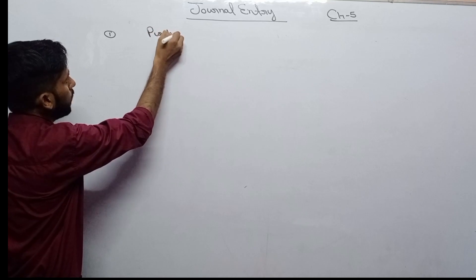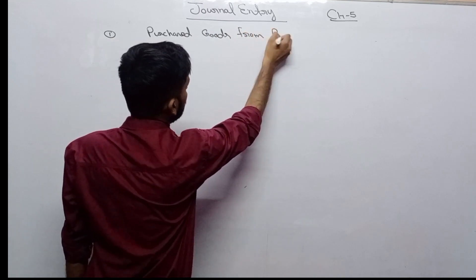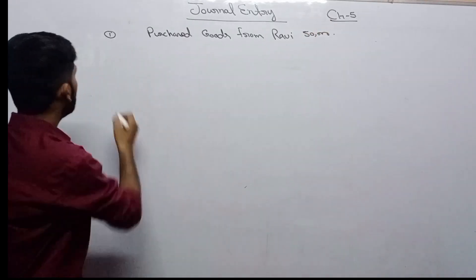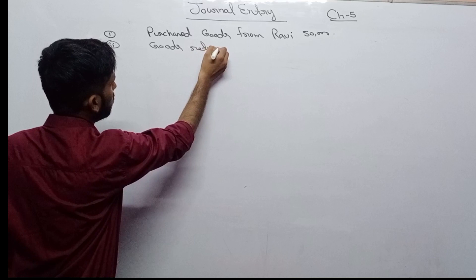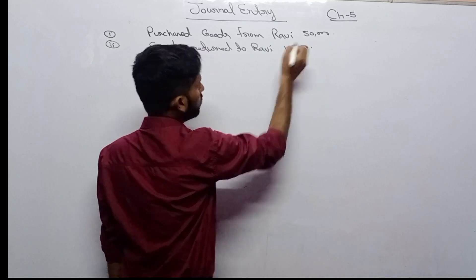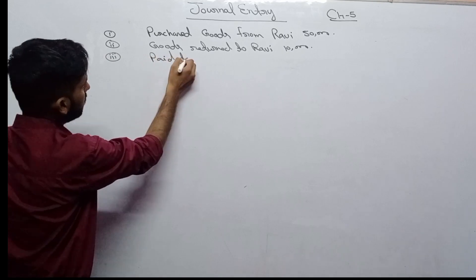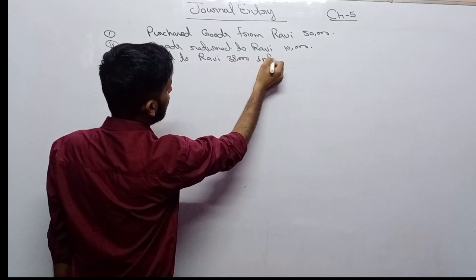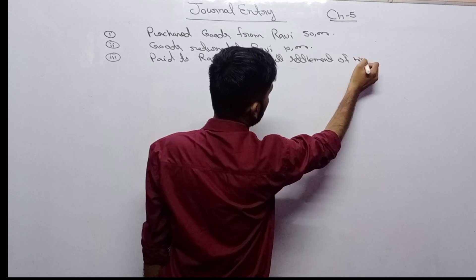There are three questions to solve. Question one: goods purchased from Ravi, 50,000. Question two: goods return to Ravi, 10,000. Question three: cash paid to Ravi, 38,000 in full settlement of his account. This is the type of question you will find in your book.